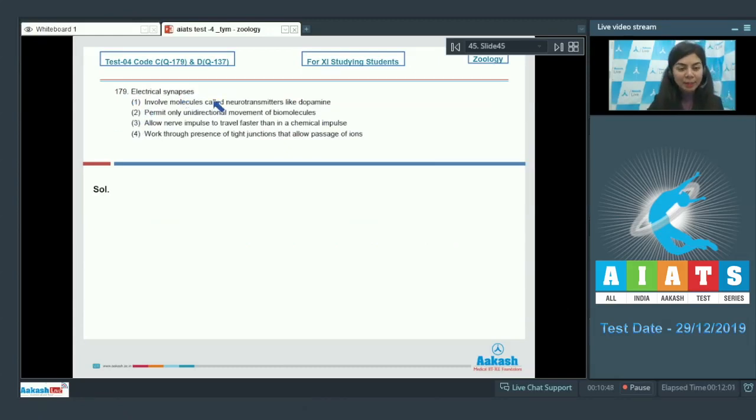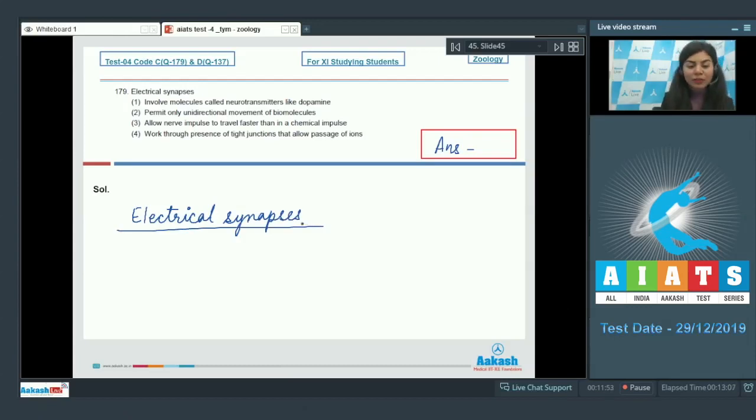Question 179: Electrical synapses. Options: involve molecules called neurotransmitters like dopamine, permit only unidirectional movement of biomolecules, allow nerve impulses to travel faster than in a chemical synapse, or work through presence of tight junctions that allow passage of ions. If you look at the features of electrical synapses, option 1 says involve molecules called neurotransmitters. There are no involvement of neurotransmitters. So that is incorrect. Neurotransmitters are a characteristic feature of chemical synapse. They permit only unidirectional movement of biomolecules. This is also incorrect. The movement of biomolecules in an electrical synapse is bidirectional.